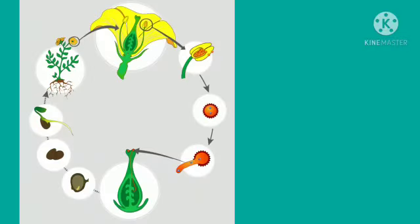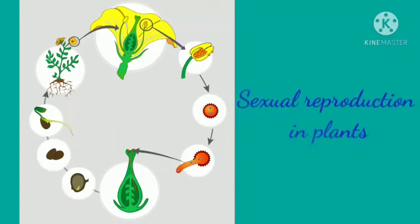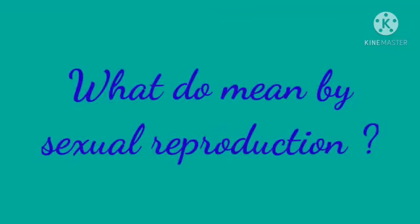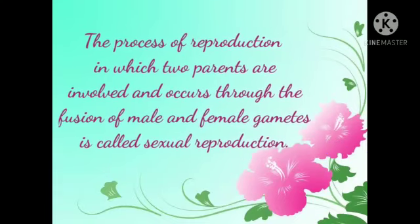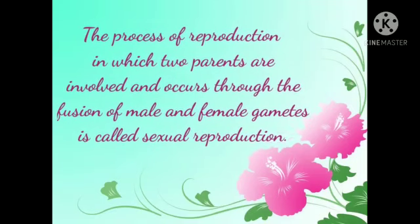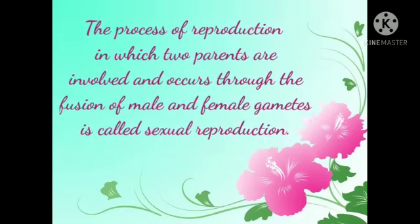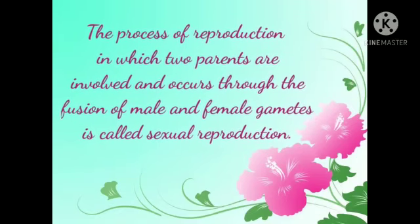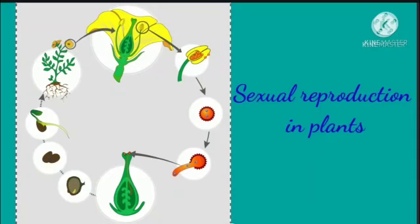Today we are going to learn about sexual reproduction in plants. What do you mean by sexual reproduction? The process of reproduction in which two parents are involved and occurs through the fusion of male and female gametes is called sexual reproduction.